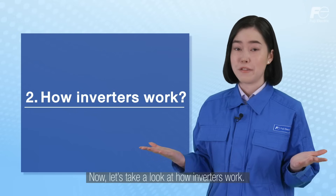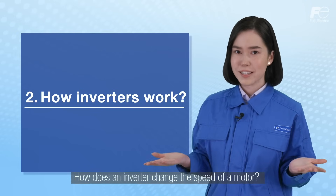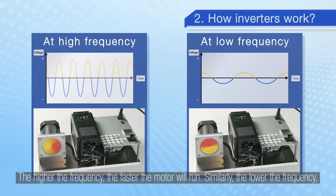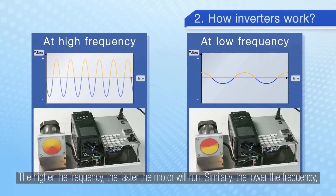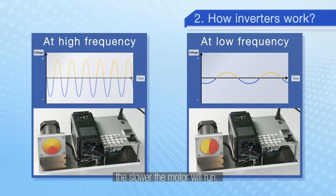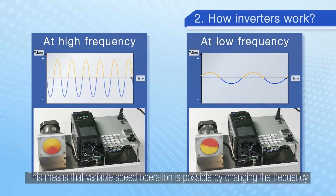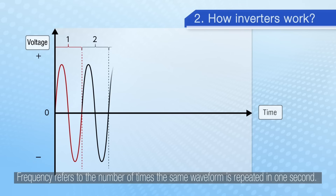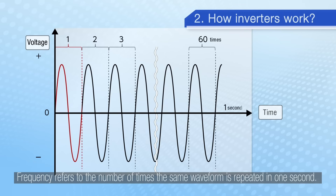Now let's take a look at how inverters work. How does an inverter change the speed of a motor? To change the motor's rotational speed it needs to change the frequency and voltage applied to the motor. The higher the frequency the faster the motor will run. Similarly the lower the frequency the slower the motor will run. This means that variable speed operation is possible by changing the frequency and voltage of the inverter. Frequency refers to the number of times the same waveform is repeated in one second.